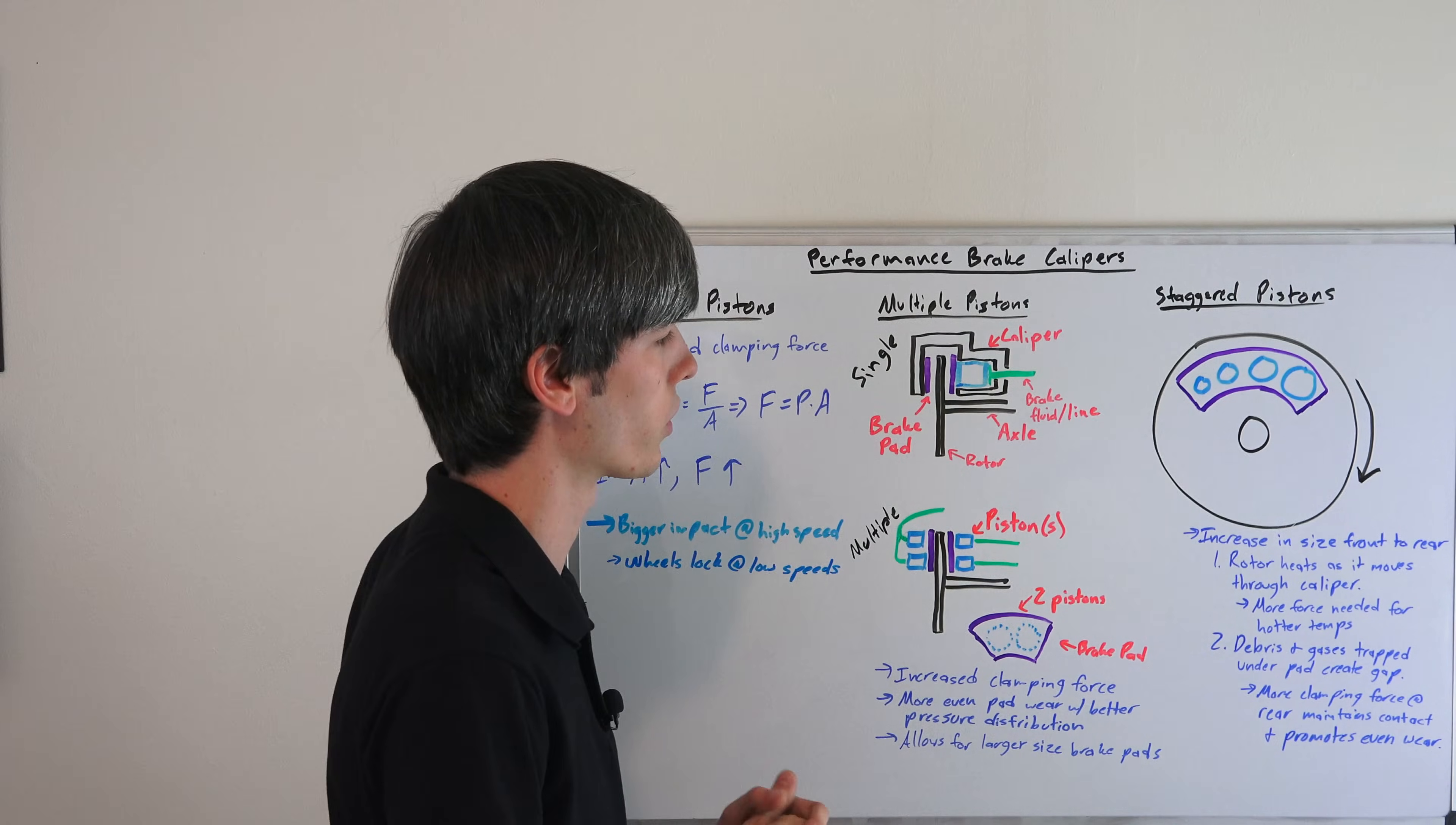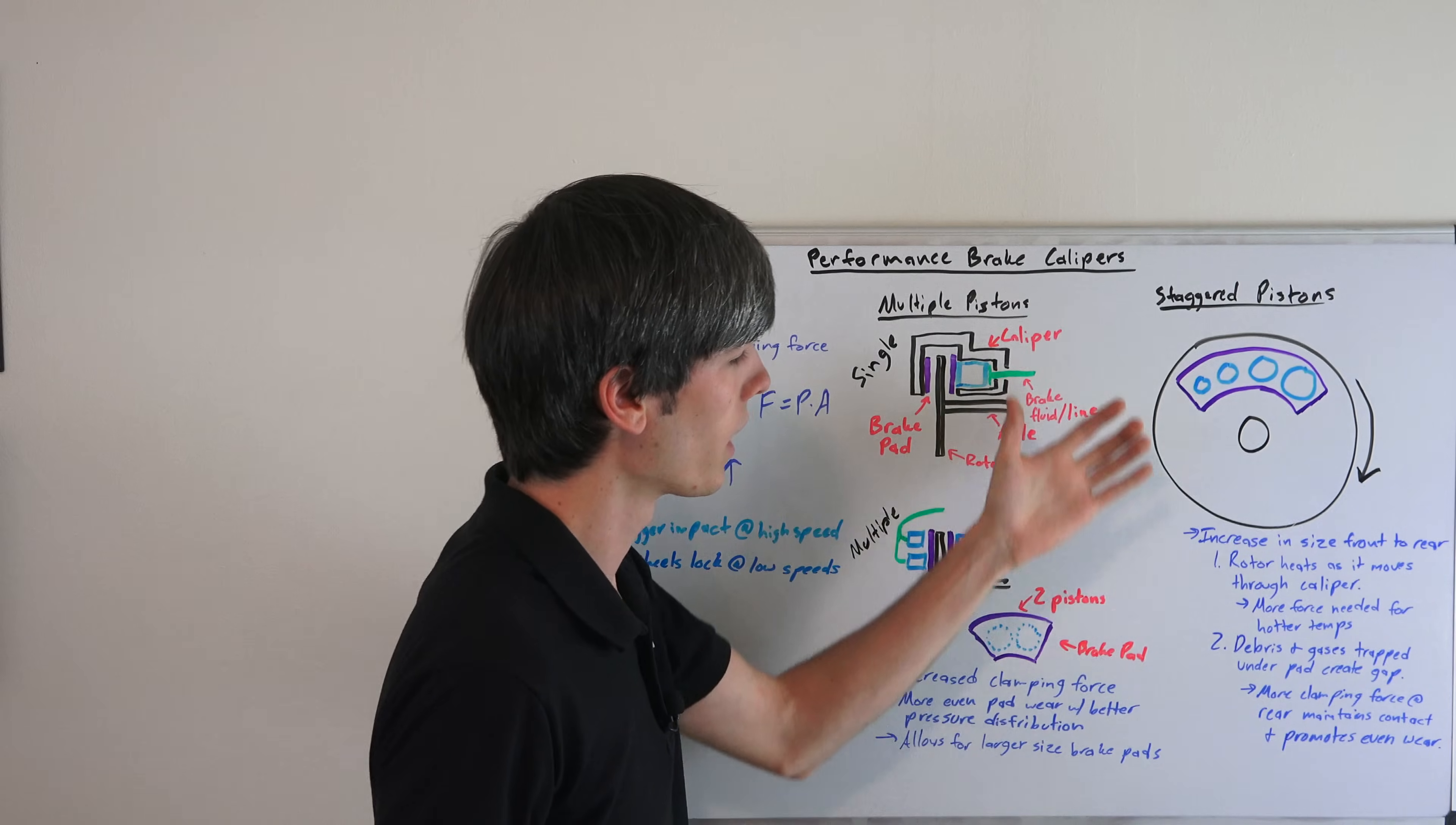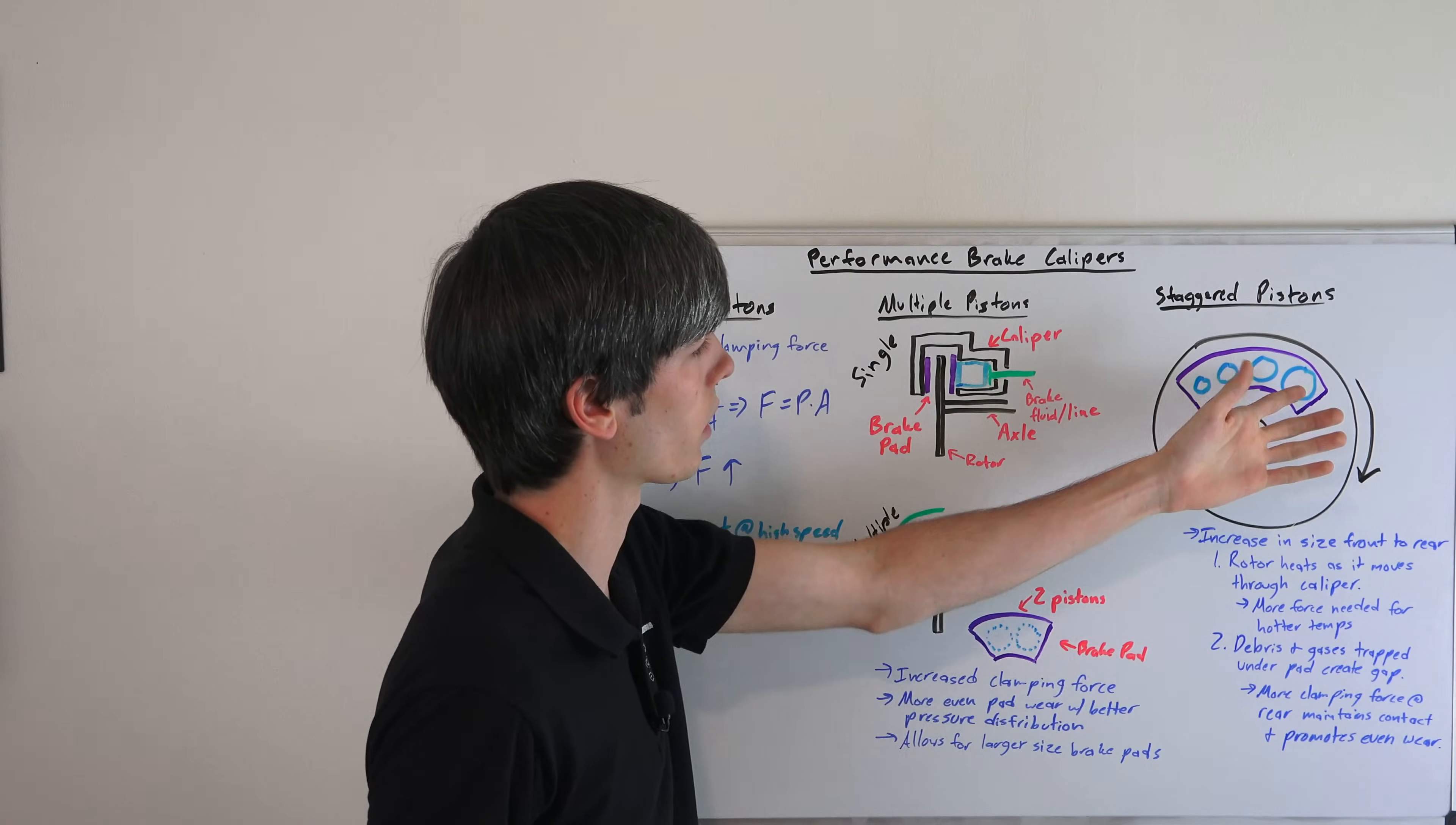Why do you increase it in that direction? Well, the rotor heats as it moves through the caliper. So as it moves along this brake pad it's getting heated up, so it's going to be hotter towards the end of it than at the beginning. And so as it's hotter, you need more pressure to have the same clamping force, and so you'll add pressure with the larger piston.